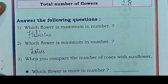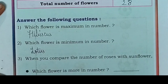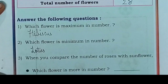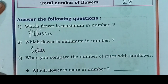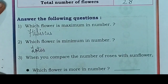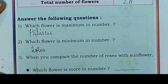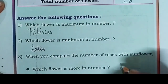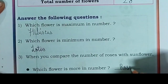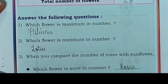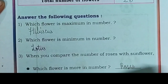When you compare the number of roses with the sunflower, which flower is more in number? Roses is 9 and sunflower is 5. Which flower is more in number? Roses. Which flower is fewer in number? Sunflower.